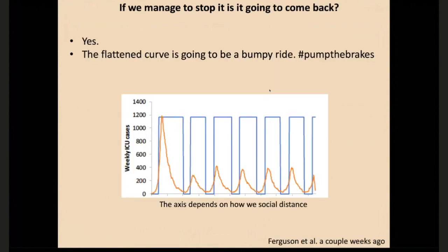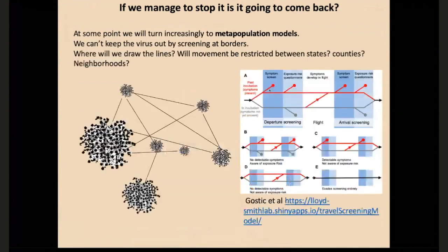If we manage to stop it, is it going to come back? Yes, absolutely. We've been talking about pumping the brakes because the flattened curve is going to be a bumpy ride. We need to expect it to come back if we still have a large susceptible population. At some point we're going to start thinking about geographically stopping it from coming back, and where we draw those lines is going to say a lot about us as a society. One thing we know that isn't working is screening at airports — we really can't keep out people based on screening because of the large number of asymptomatic individuals.